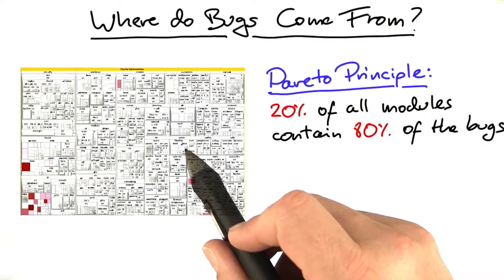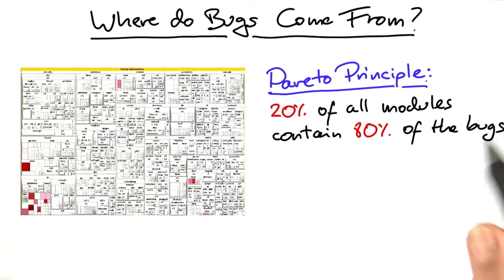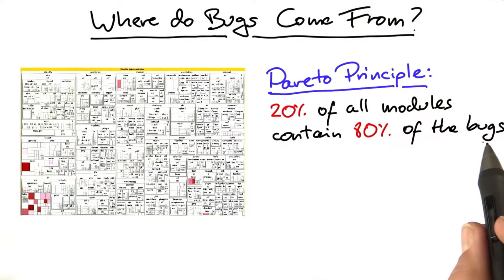What we always found was the so-called Pareto principle. That is, 20% of all modules contain 80% of the bugs.